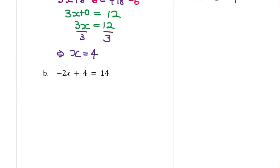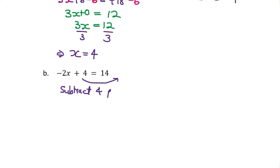Now, what if you have a different question where x has a coefficient that is negative? How will you approach that? As always, you have to separate the numbers from the variable, which means moving the constant 4 to the other side. That means subtracting 4 from both sides, giving negative 2x plus 4 minus 4 equal to positive 14 minus 4.